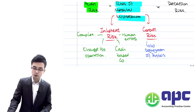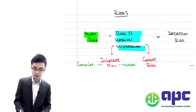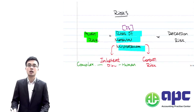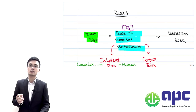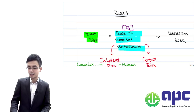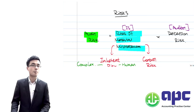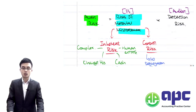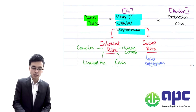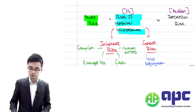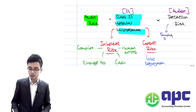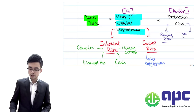Just a reminder: the risk of material misstatement is related to the financial statements. What about detection risk? Detection risk is the risk that the auditor cannot detect the fraud and error within the organisation's financial statements. Detection risk can be divided into sampling risk and non-sampling risk.